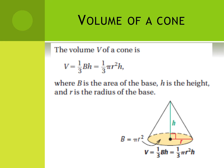Next we have the volume formula. Just like the pyramid, it's one-third times the area of the base times the height. When it's a cone, the base is a circle, so it's one-third pi r squared times h. This is very similar to the cylinder — the cylinder was just pi r squared times height — and the cone is the same, just multiplied by one-third. That capital B is the area of the base, and the base is a circle.